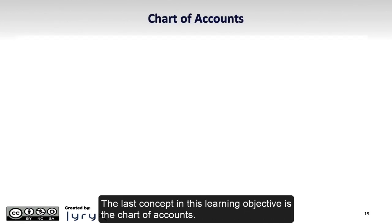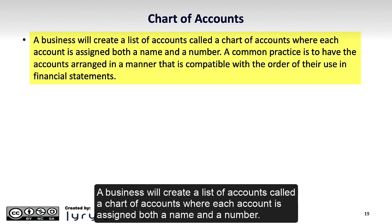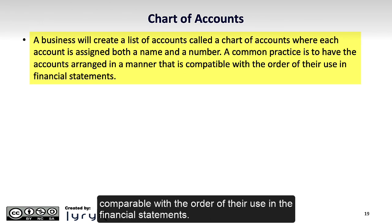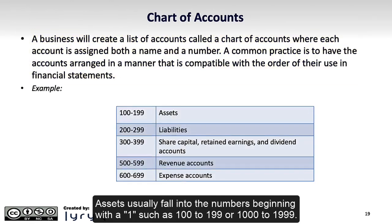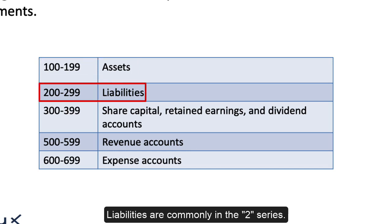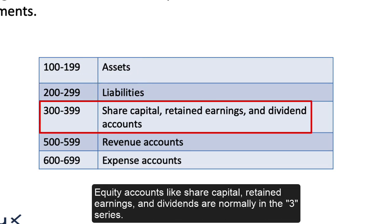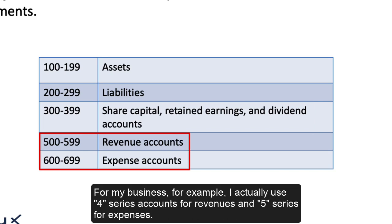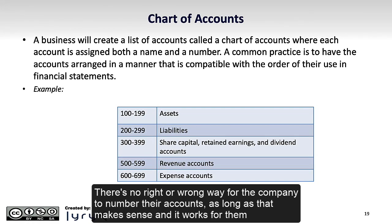The last concept in this learning objective is the chart of accounts. A business will create a list of accounts called a chart of accounts, where each account is assigned both a name and a number. The number makes allocating or coding transactions easier and allows accounts to be ordered properly. A common practice is to arrange accounts in a manner comparable with the order of their use in the financial statements. Assets usually fall into numbers beginning with 1, such as 100–199 or 1000–1999. Liabilities are commonly in the 2 series. Equity accounts like share capital, retained earnings, and dividends are normally in the 3 series. Revenues are commonly 5 series accounts and expenses 6 series, but not always — for example, some businesses use 4 series for revenues and 5 series for expenses. There's no right or wrong way for a company to number their accounts, as long as it makes sense and works for them.